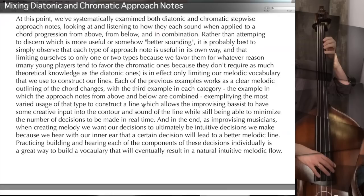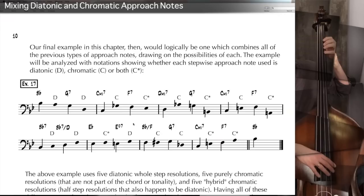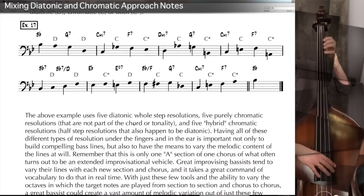Practicing building and hearing each component individually is a great way to build a vocabulary that will eventually result in a natural intuitive melodic flow. Our final example, example 17, logically combines all previous types of approach notes: upper diatonic, lower diatonic, upper chromatic, and lower chromatic, all mixed together based on what seemed to be the best usage of sound in navigating this progression. The example will be analyzed with notation showing whether each stepwise approach note is diatonic (marked D), chromatic (marked C), or both (marked C with an asterisk). Here is example 17.